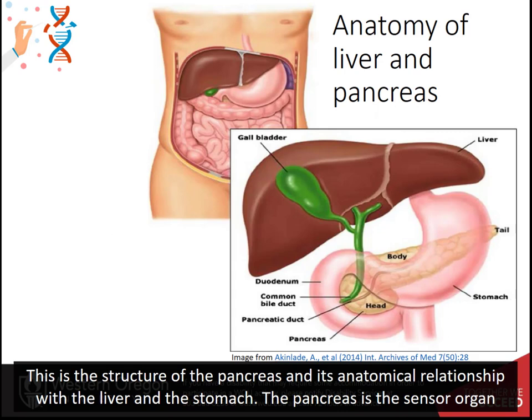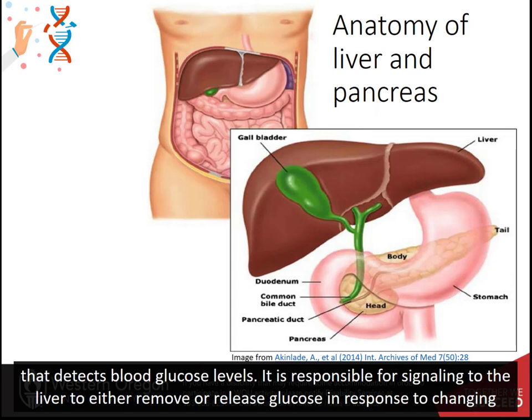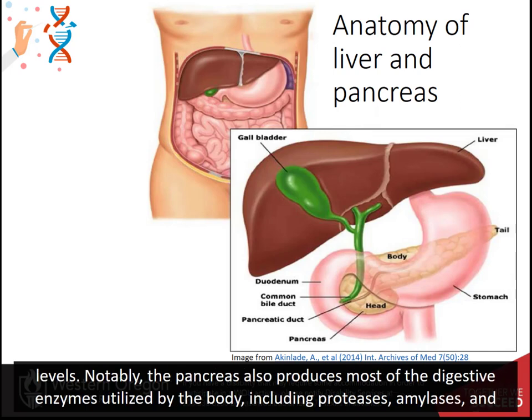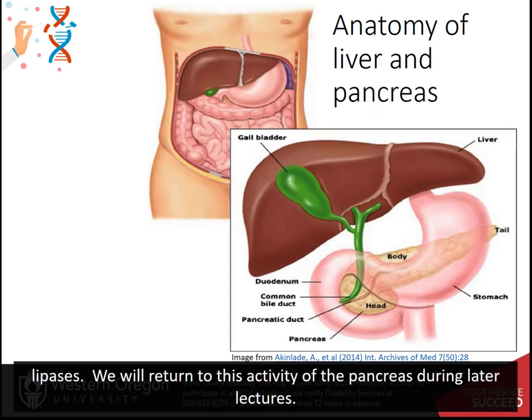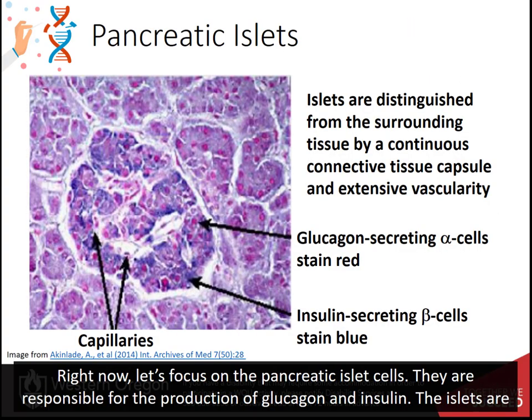This is the structure of the pancreas and its anatomical relationship with the liver and the stomach. The pancreas is the sensor organ that detects blood glucose levels and is responsible for signaling to the liver to either remove or release glucose in response to changing levels. Notably, the pancreas also produces most of the digestive enzymes utilized by the body, including proteases, amylases, and lipases. We will return to this activity of the pancreas during later lectures. Right now, let's focus on the pancreatic islet cells, which are responsible for the production of glucagon and insulin.